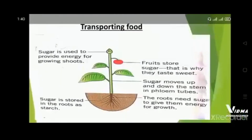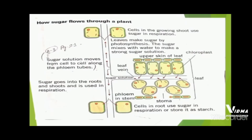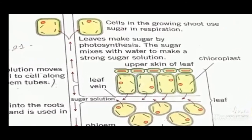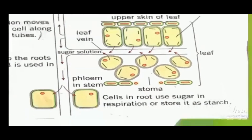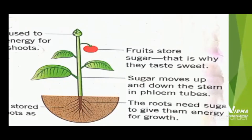This is the process of how sugar flows through a plant. Number one: cells in the growing shoot use sugar in respiration — for respiration, cells need glucose. Leaves make sugar by photosynthesis, and the sugar is mixed with water to make a strong sugar solution.